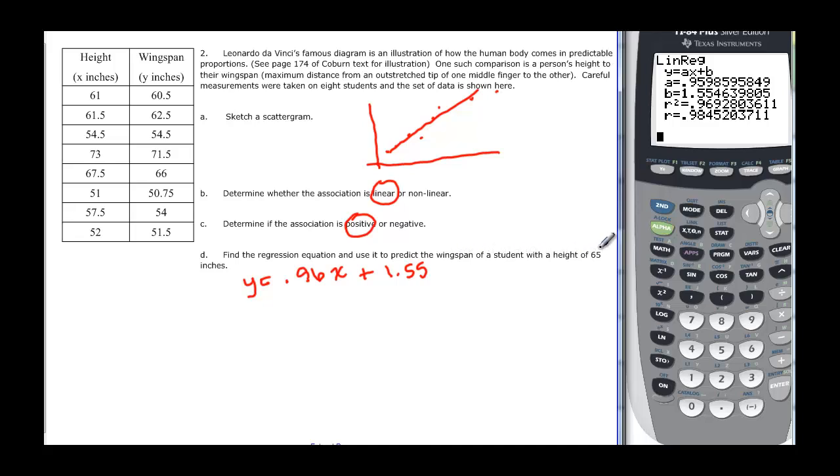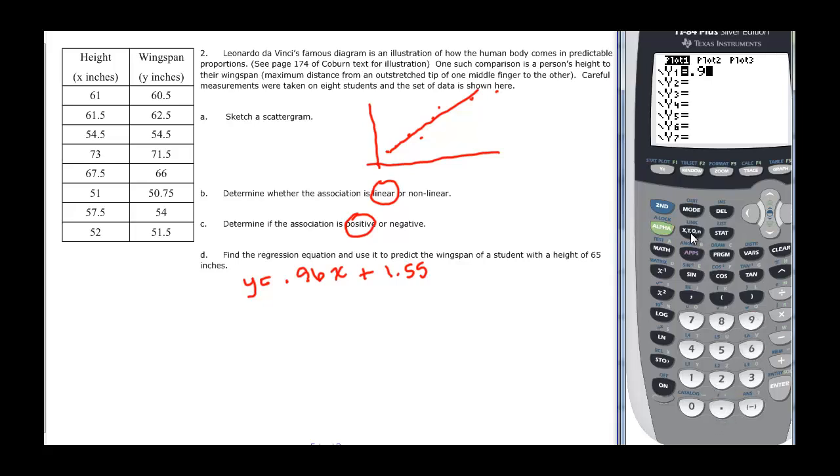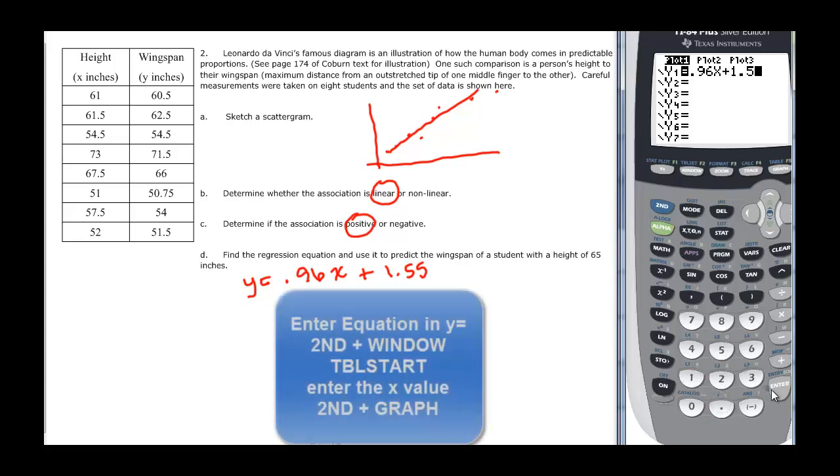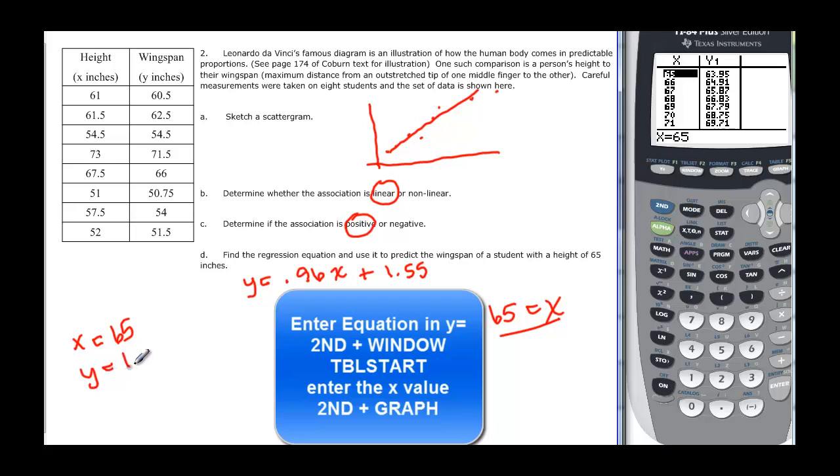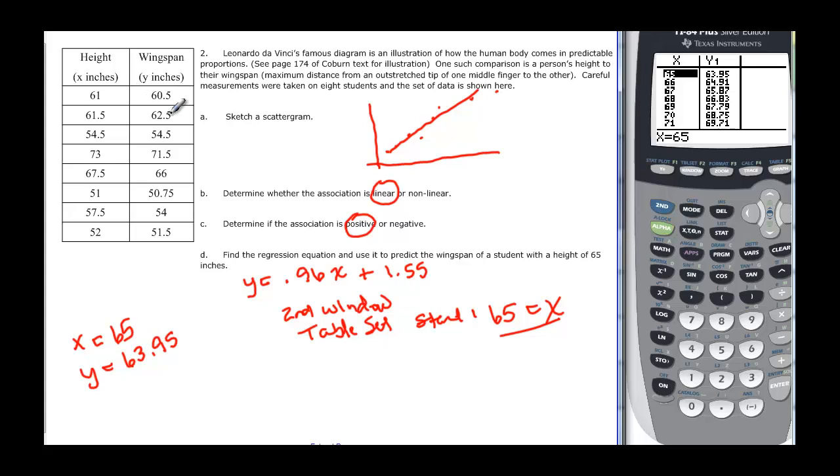And then it asks us to find the wingspan of a student that is a height of 65 inches. Well, I'm going to do this the quick and easy way. I'm going to plug it into my calculator, .96x plus 1.55. And then I'm going to do second window, and then that will let me do my table setup. And I want to start at 65, because that's the value I want. These are x values that I'm plugging in. So I want to plug in x equals 65. So I want to plug in 65, and then I just do second graph to look at the table. And it tells me that when x equals 65, y is equal to 63.95. And that feels like about the same. Most cases, it's a little bit smaller than the actual height of the person. And that's what happens here. So we can say that feels pretty good.